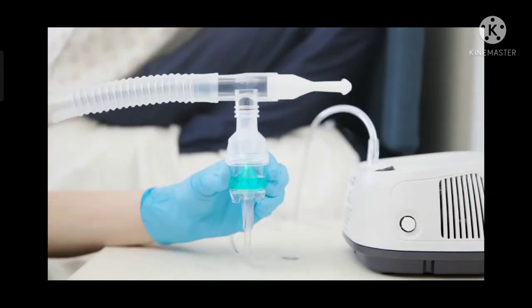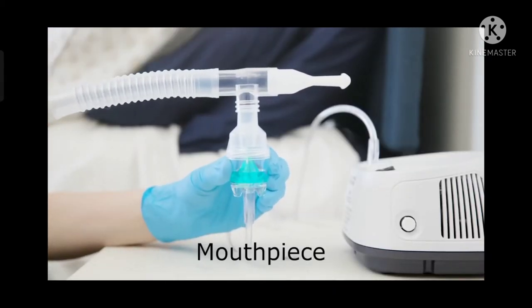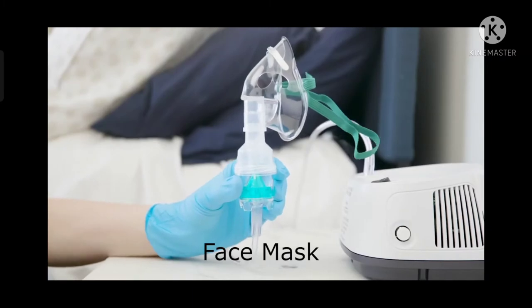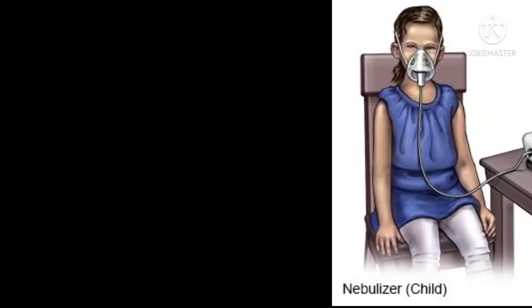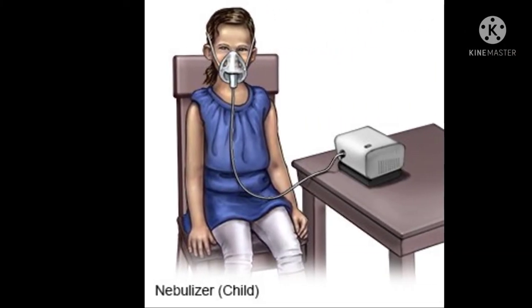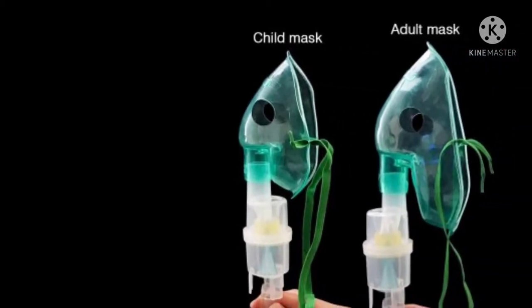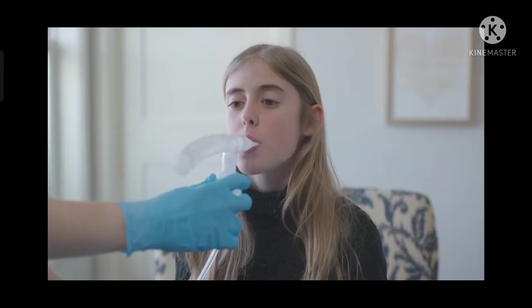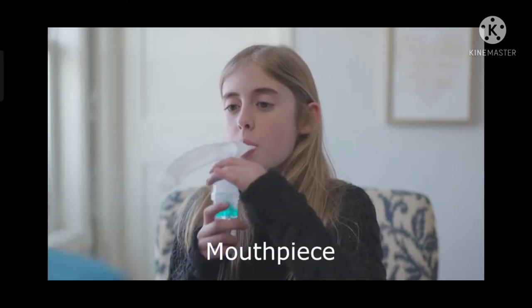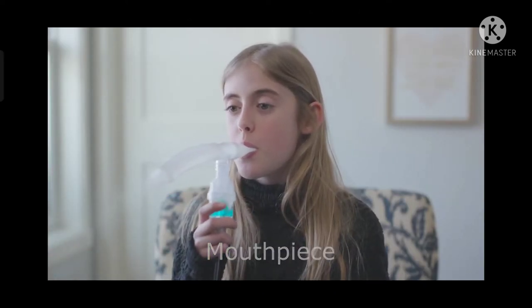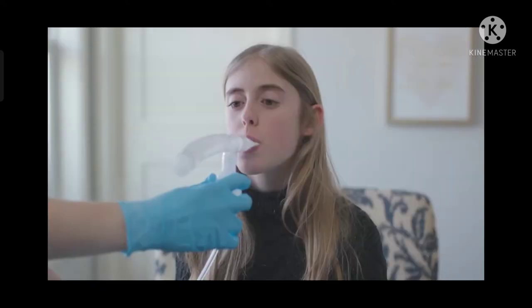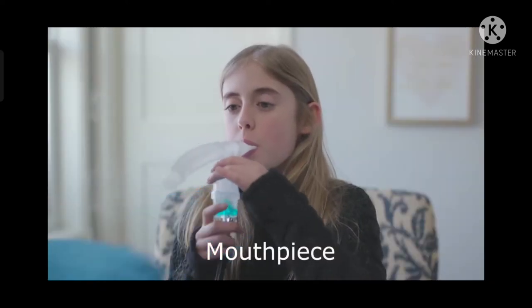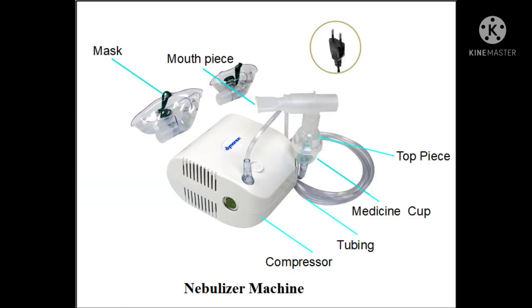The other end of the tubing can be connected to a mouthpiece or a face mask. Generally in children, a face mask is preferred, which is available in two sizes: one for a child and one for an adult. When a mouthpiece is used, we should place it in the mouth and ask the child to close the lips tightly.